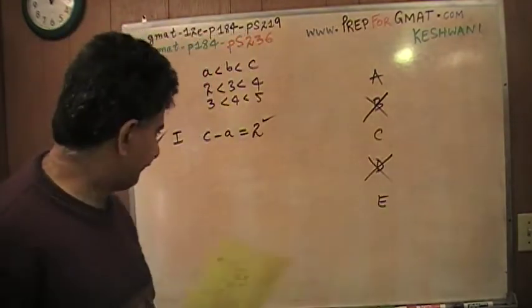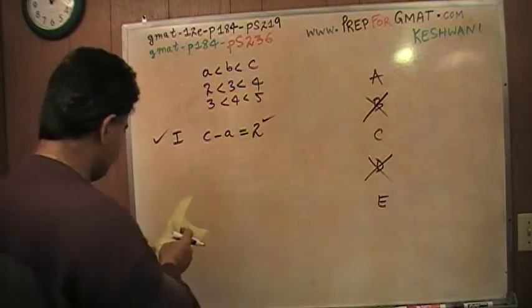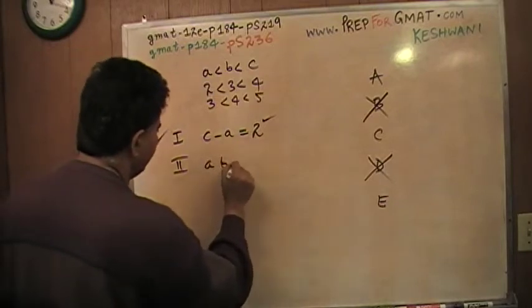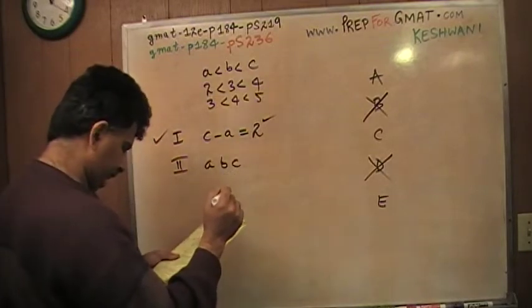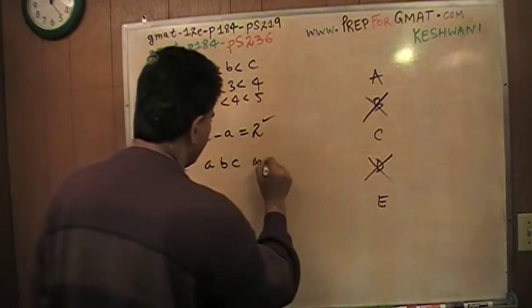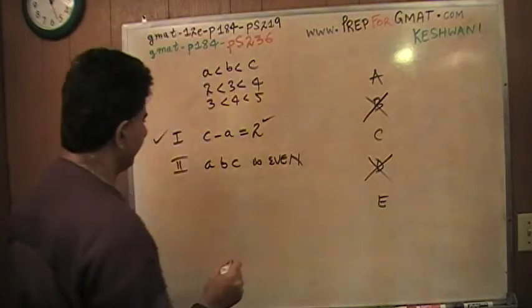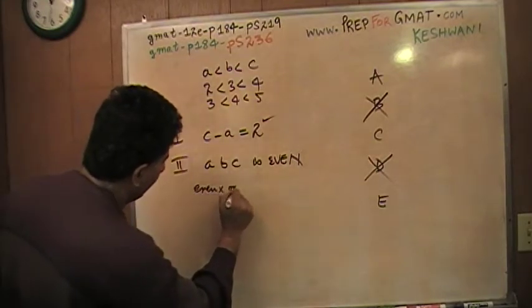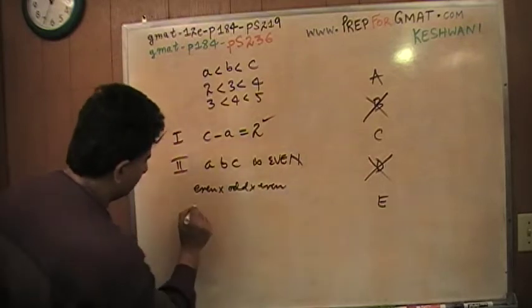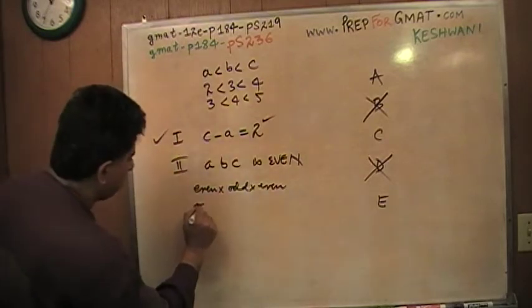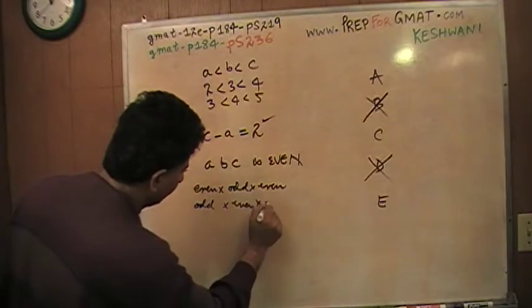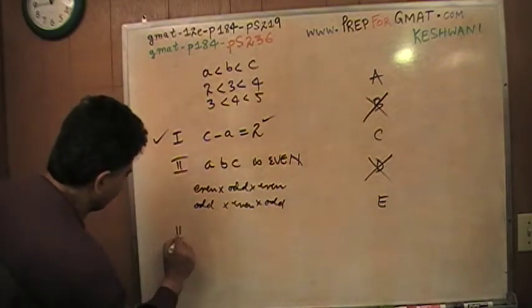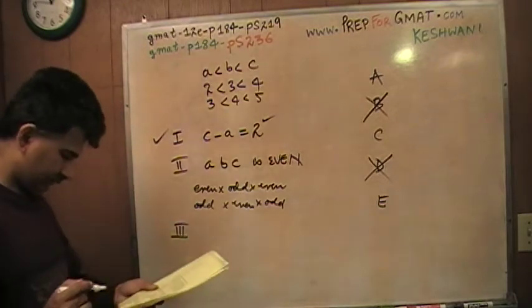Let's look at the second statement. A times B times C is even. Well, let's take a look at it. So if you start with even numbers, what we are asking basically is, even times odd times even, or if we start with odd, odd times even times odd. Are these quantities even numbers? This seems a bit messy. I'm going to move on to the third statement.